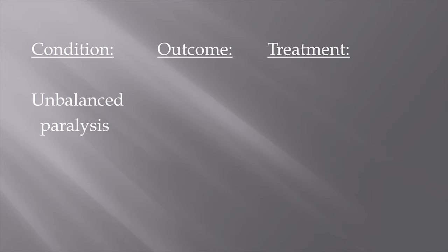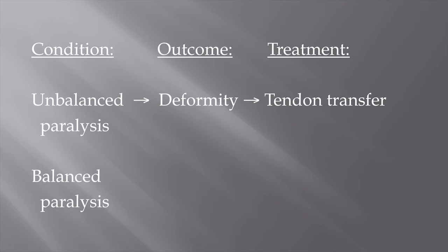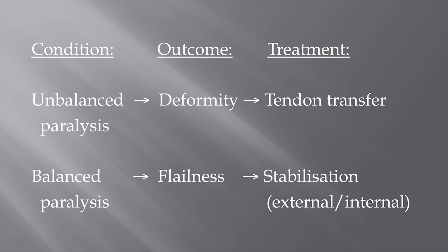So if we have an unbalanced paralysis this leads to deformity and the treatment is tendon transfer. On the other hand if we have a balanced paralysis this leads to flailness and the treatment is stabilisation either external or internal. That is the first principle we need to understand — namely the difference between balanced and unbalanced paralysis.